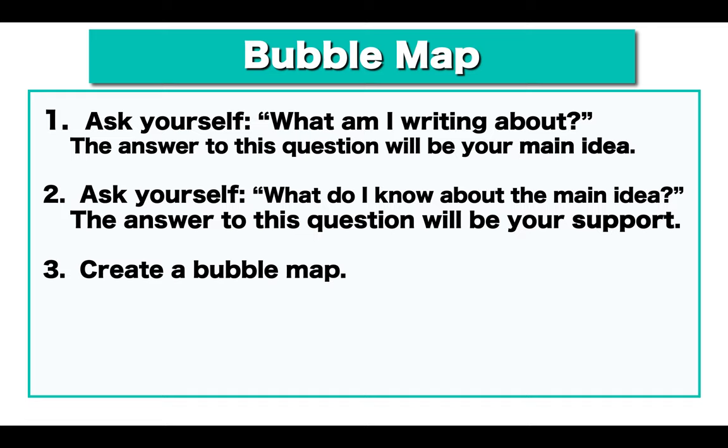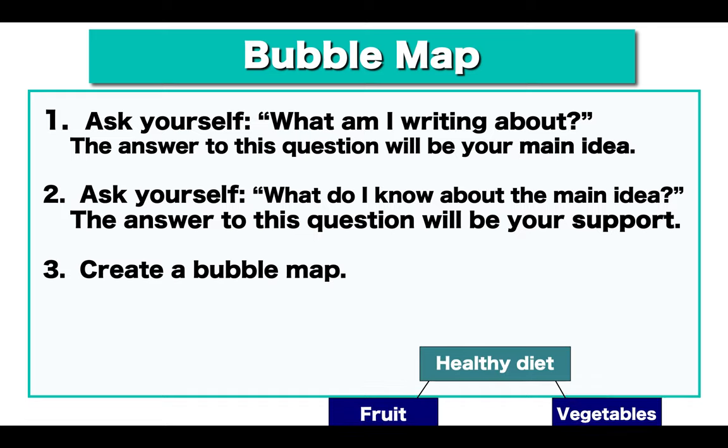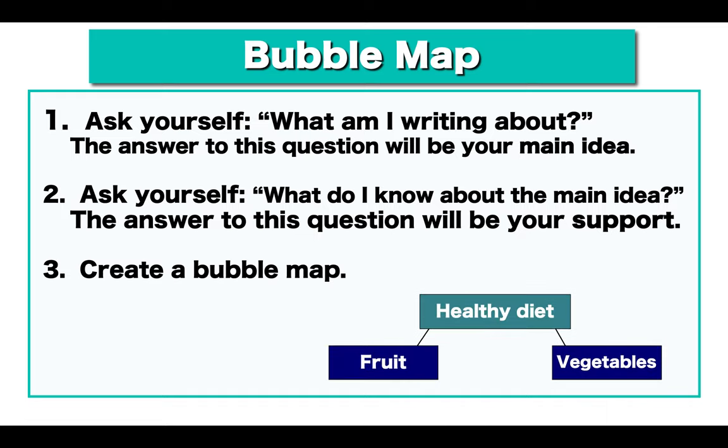And then we're going to create a bubble map just like this one. 'Healthy diet' — that's your main idea. And your support: fruit and vegetables.